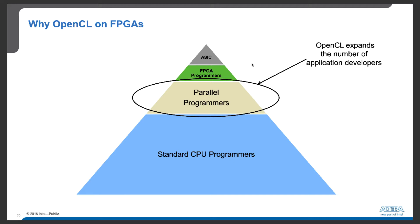Traditionally, there are a lot more programmers for standard CPUs than for FPGAs, partly because FPGA development requires knowledge of FPGA resources and significant skills in logic design. The advantage of OpenCL as a high-level programming language is that it expands the number of application developers for FPGAs.